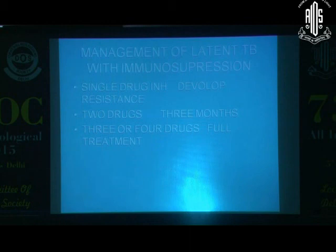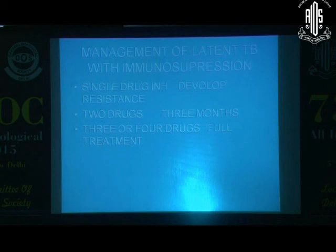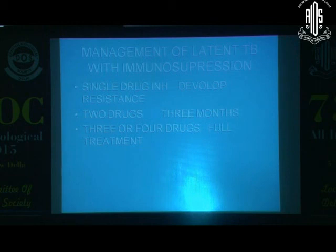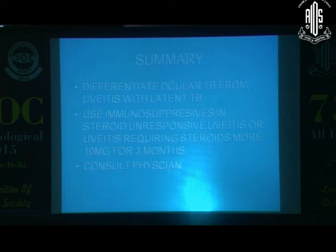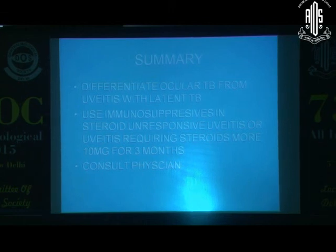How do we manage latent tuberculosis? Books say single drug — isoniazid — but we have resistance. Various parts of the country have different resistance patterns; in North India, 20% of patients are resistant to isoniazid and rifampicin. In our hospital, we give a full four-drug therapy for prophylaxis, not two drugs, and give it for six to nine months. Two drugs for three months is another option. In Bombay, some hospitals give a single drug, but in North India, single drug will create tremendous resistance for ocular tuberculosis. It is important to always look out for latent tuberculosis, use immunosuppressives, and if steroid-unresponsive for more than three months, consult a physician. Thank you.